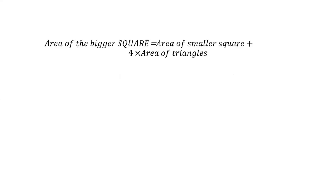So the area of the bigger square equals the area of the smaller square plus four times the area of the triangle, as we already discussed. That gives us: (x + y)² = Z² + four times (½ × x × y).